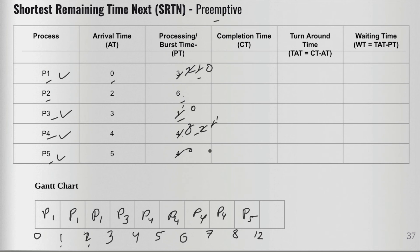The only process remaining is P2. We bring P2 in, and it has six time units. So it runs from twelve to eighteen, completing at time eighteen.